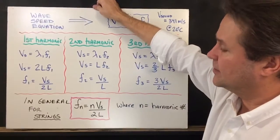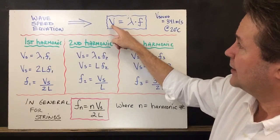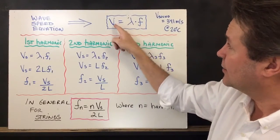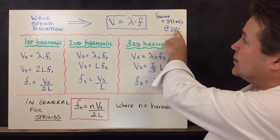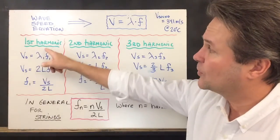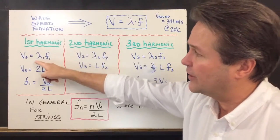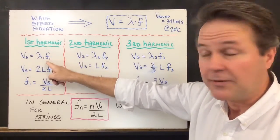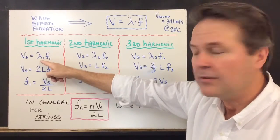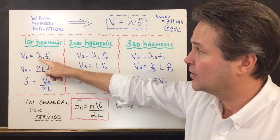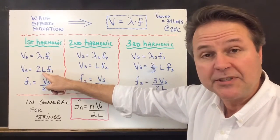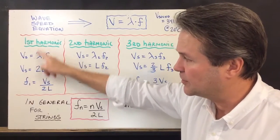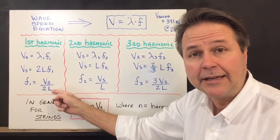Now, reminding ourselves that the wave speed equation is velocity equals lambda times frequency. The speed of sound is fixed at a particular temperature — at 20 degrees it's 341 m/s. So for the first harmonic, the speed of sound equals the wavelength of the first harmonic times its frequency. Since the wavelength for the first harmonic equals 2L, the frequency of the first harmonic equals the speed of sound divided by twice the length of the string.